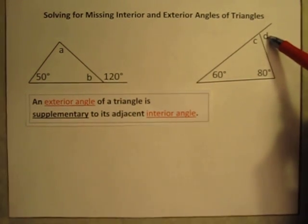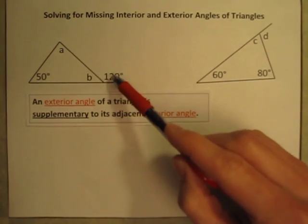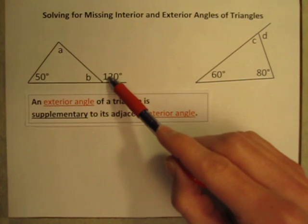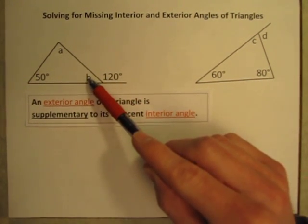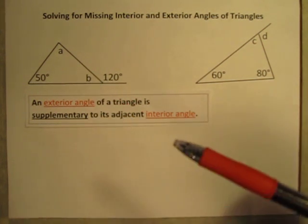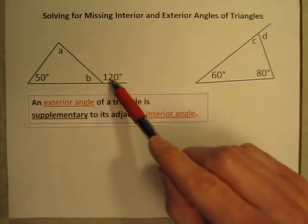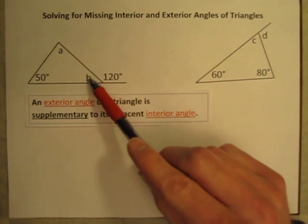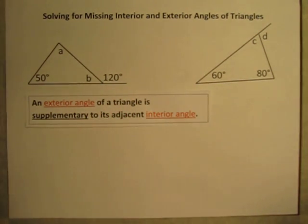Angle D up here is an exterior angle. So I know that this angle here, 120 degrees, and angle B here adjacent to it on the inside of this triangle, 120 and angle B are supplementary. Or 120 degrees plus whatever angle B is equals 180 degrees.